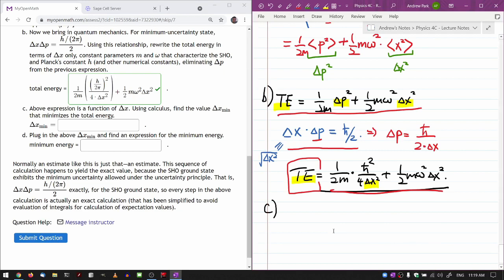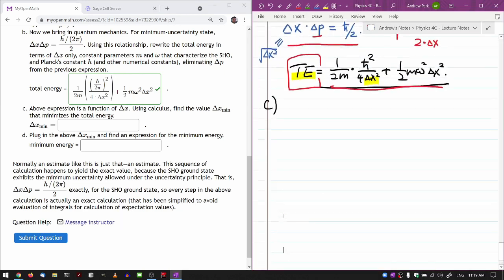And the calculus, so the question says using calculus. And the calculus procedure for this is pretty simple. What you do is you take the derivative of the total energy in terms of delta x. And you set that derivative equal to be zero. So that you have minimum possible uncertainty in terms of delta x.